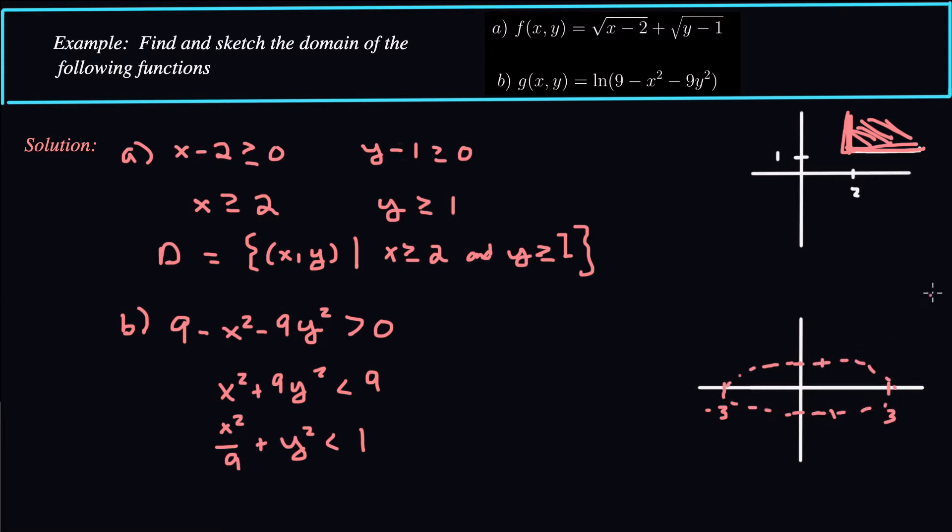But our domain is not the edge of the ellipse. We have to be inside the ellipse because we want to be strictly less than 1. So our domain is actually everything inside the ellipse.